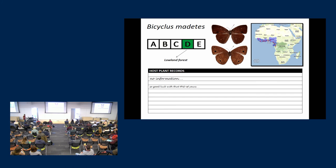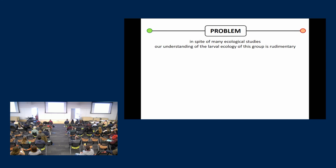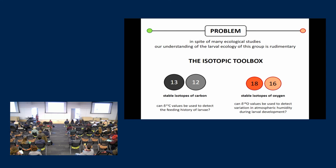So indeed, this is the problem I had, that we actually know a lot about all these butterfly species. Well, we only know it about the adults, the ones that you can see flying around, and you know the habitat where they fly, and we know when stuff about the phenology, etc. But we do not know anything about the larval ecology. So that was a problem which we hope to solve by opening the isotopic toolbox.